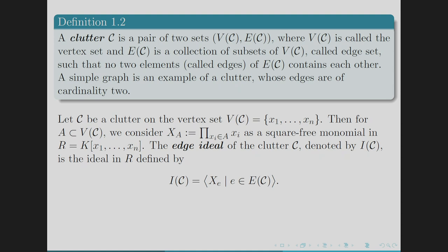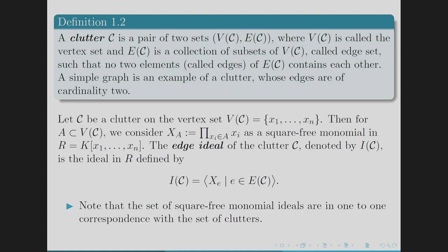Any square-free monomial ideal can be associated with a clutter, and the set of square-free monomial ideals and the set of clutters are in one-to-one correspondence. For a subset A of the vertex set, we define the monomial X^A as the product of the variables. Taking X^E for all edges E in the clutter and generating the ideal gives the edge ideal of the clutter, which is a square-free monomial ideal.